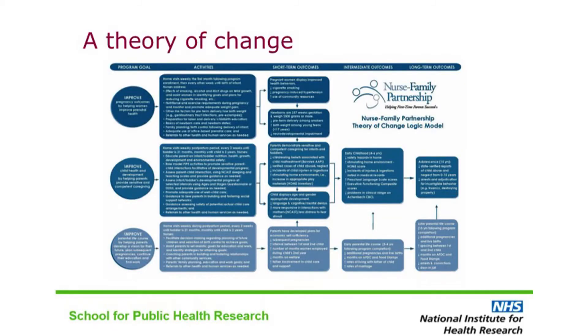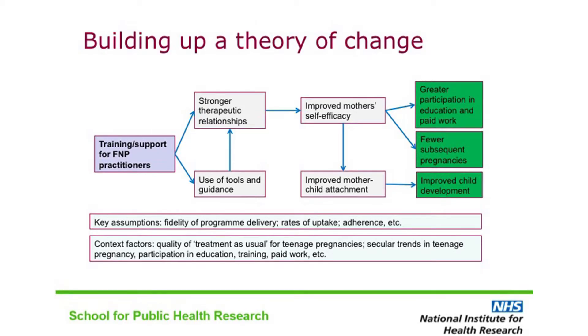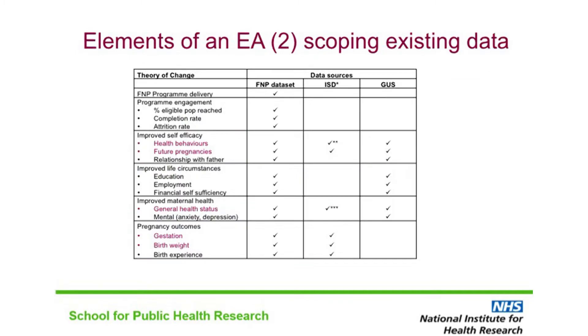The Family Nurse Partnership is a tightly prescribed intervention that can only be implemented under licence. The theory of change provided by the developers is very complex. We undertook a series of workshops with stakeholders — including policy makers, senior practitioners, managers, and analysts — to identify the outcomes most important to them. The unit responsible for delivering the FNP collects very detailed process and outcome data, and we were able to identify a number of important outcomes that were routinely measured in all pregnancies in Scotland. This kind of routinely collected data creates opportunities for evaluation at much lower cost and widens the range of evaluation designs you can consider within a given budget.